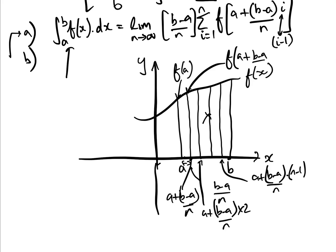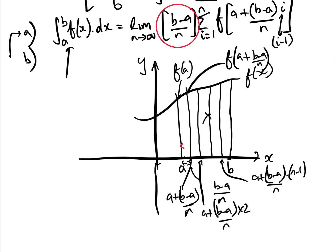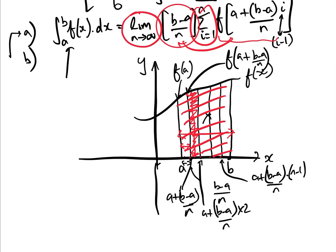The heights are f(a), f(a plus (b minus a)/n), and so on. In the formula, (b minus a)/n is the width of each rectangle, and f(a plus (b minus a)i/n) is the corresponding height. Width times height gives the area of one rectangle, and the sum adds all the rectangles. In the limit as n approaches infinity, this equals the definite integral — the total area.